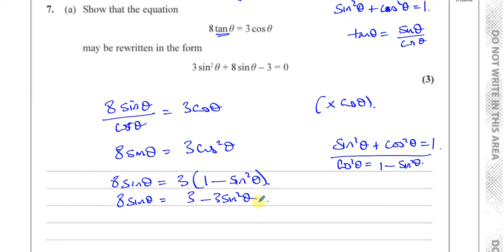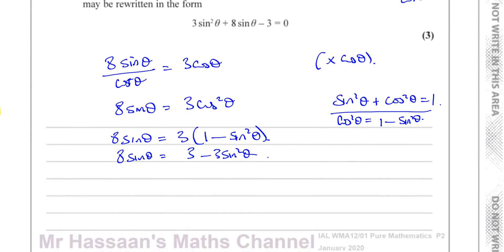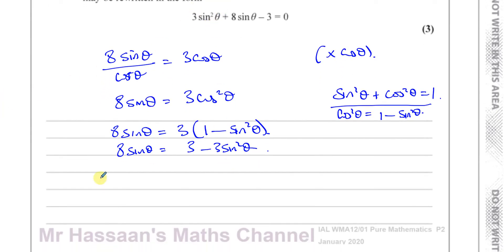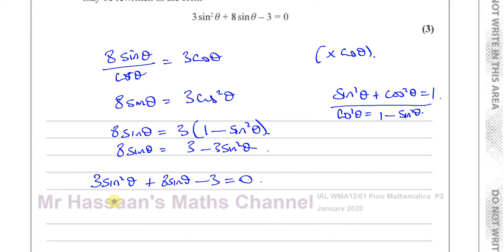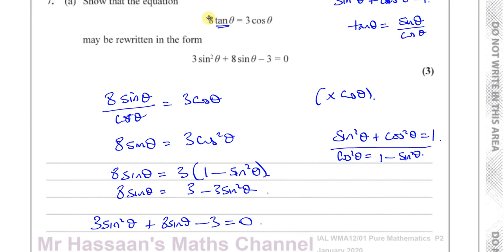And now you notice that the very next line will be what we want because we want to bring everything onto one side, bring it to the side where the sine squared theta is going to be positive. So I'm going to add 3 sine squared theta to both sides. So I'll have 3 sine squared theta plus 8 sine theta minus 3 equals 0. So we have finished part A.